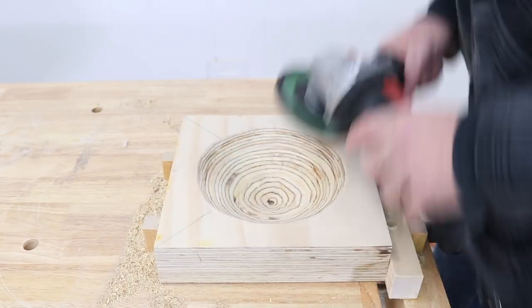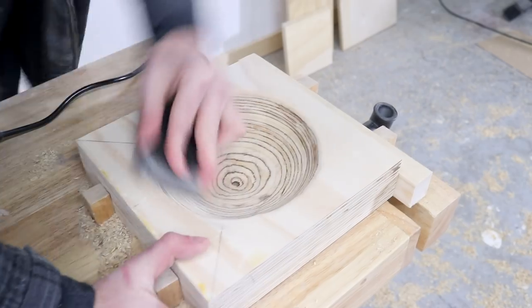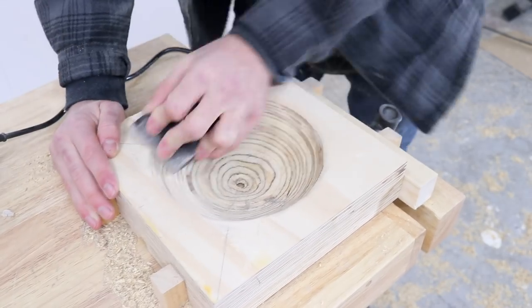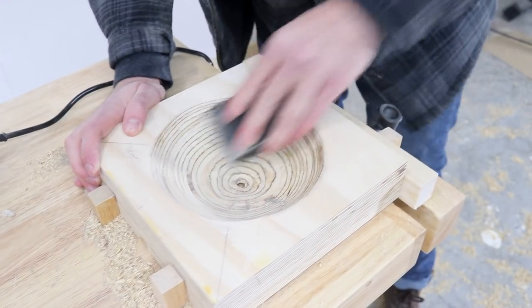I used a 120 grit flap disc to refine the shape then I used an 80 grit, 150, and a 220 grit sanding sponge to smooth out the bowl as much as possible.